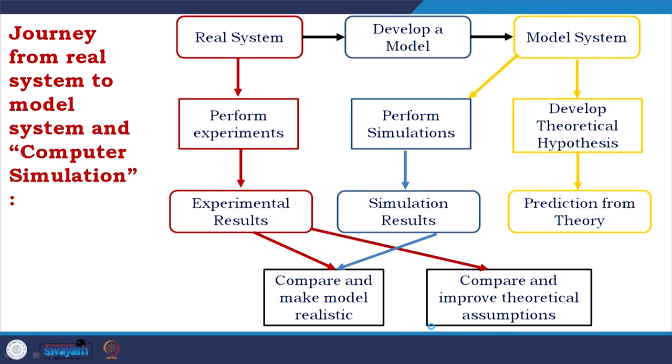You have experimental results, simulation results, and predictions from theory. The more you combine them, the more your model system is close to reality. This is essential because then you can perform simulation or theoretical experiments without spending money. There are also cases where performing the actual experiment might be impossible, expensive, or dangerous — we will talk about those.